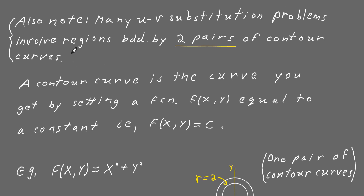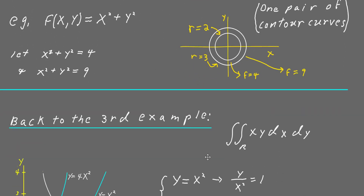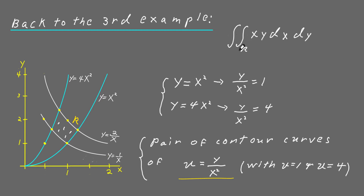In many uv substitution problems you're going to have a region bounded by two pairs of contour curves, and that's the case for the third region we just looked at. A contour curve is the curve you get when you have a function of x and y and set it equal to a constant. For example, if f(x,y) = x² + y² and you set it equal to 4 you get a circle of radius 2; set it equal to 9 and you get a circle of radius 3. These two curves together form one pair of contour curves for this function.